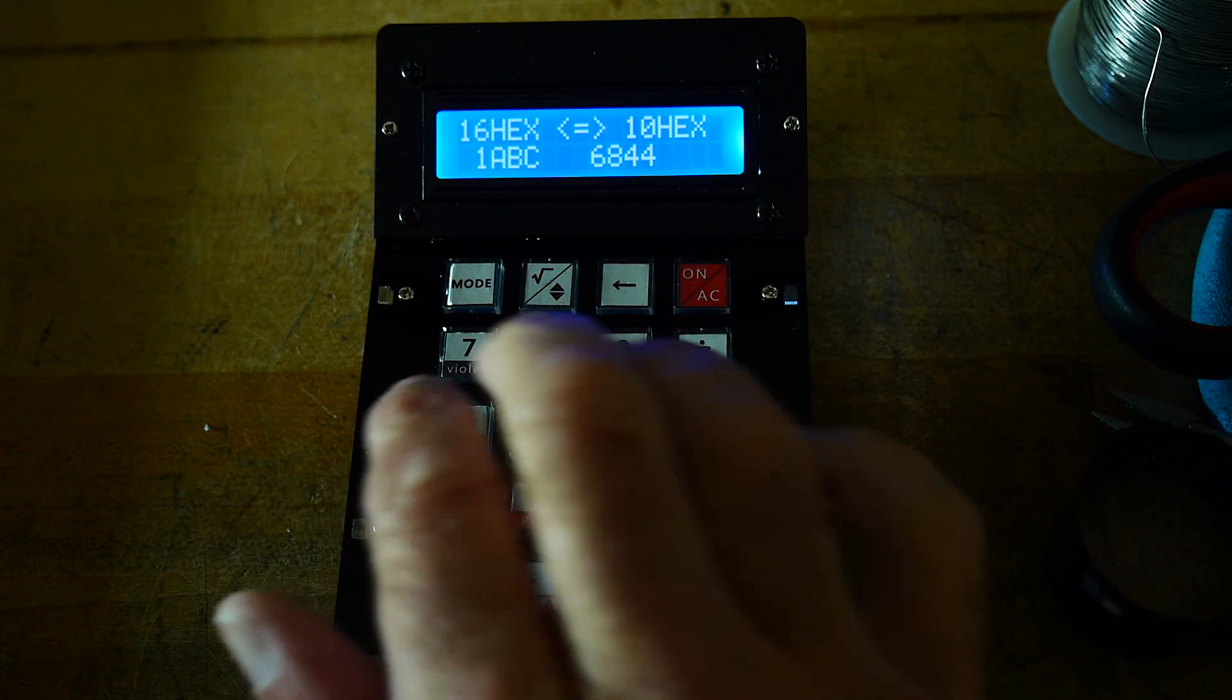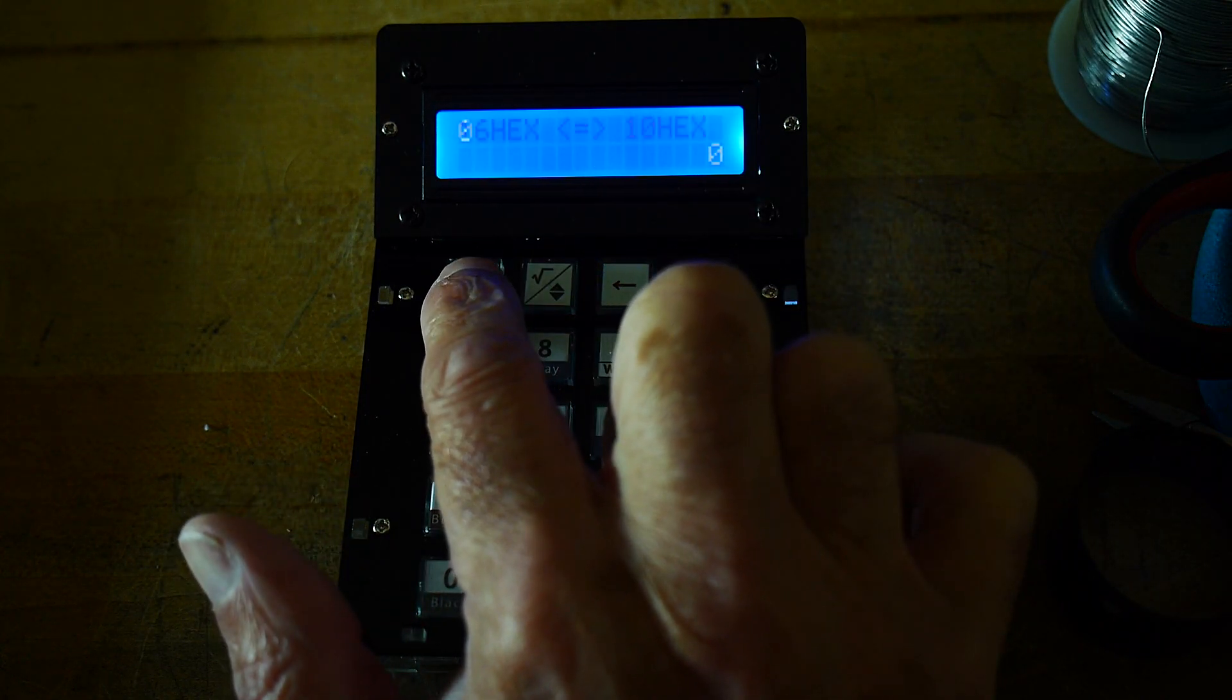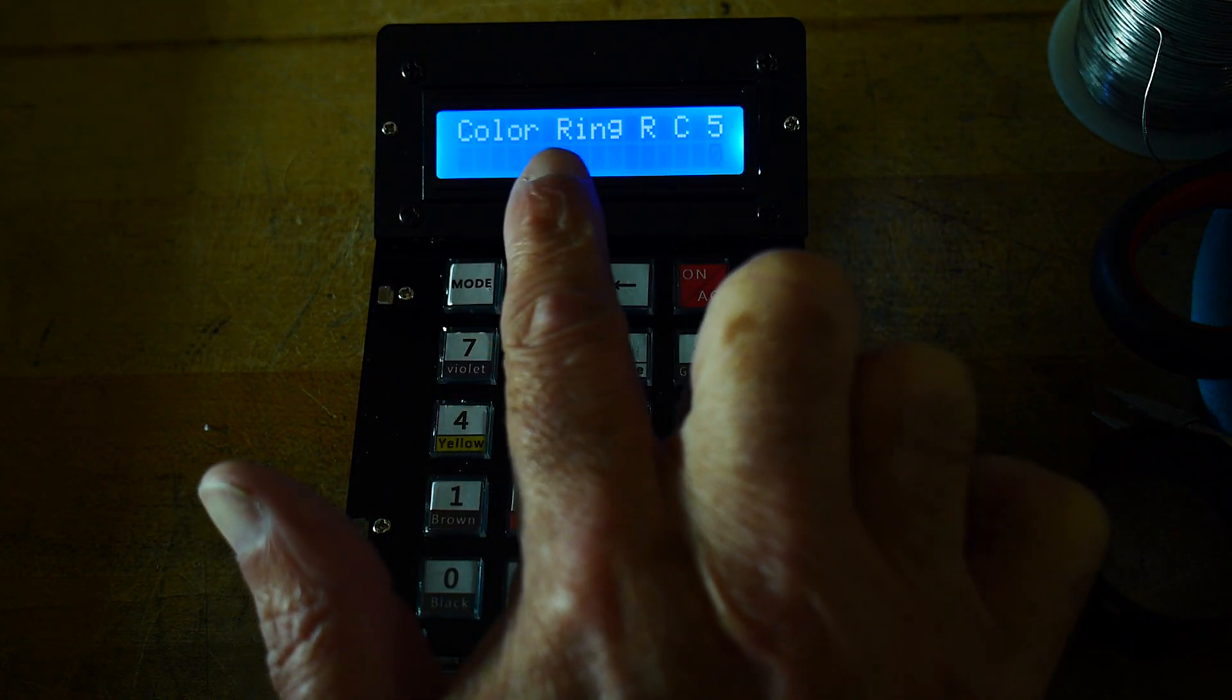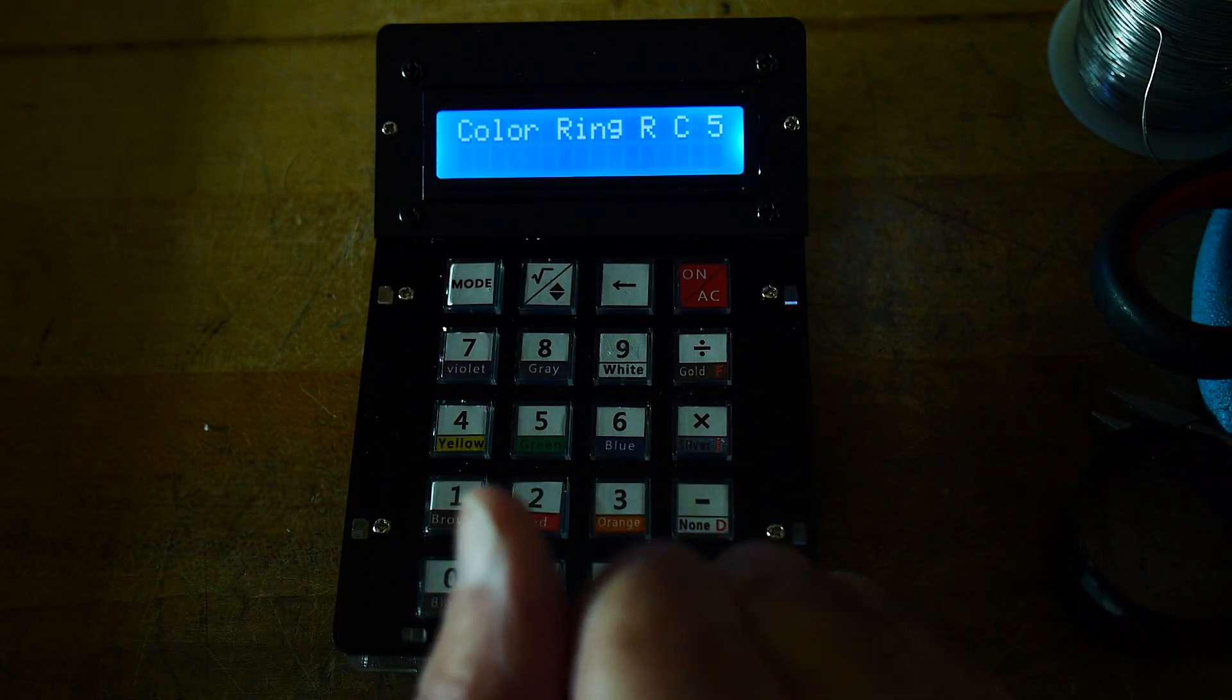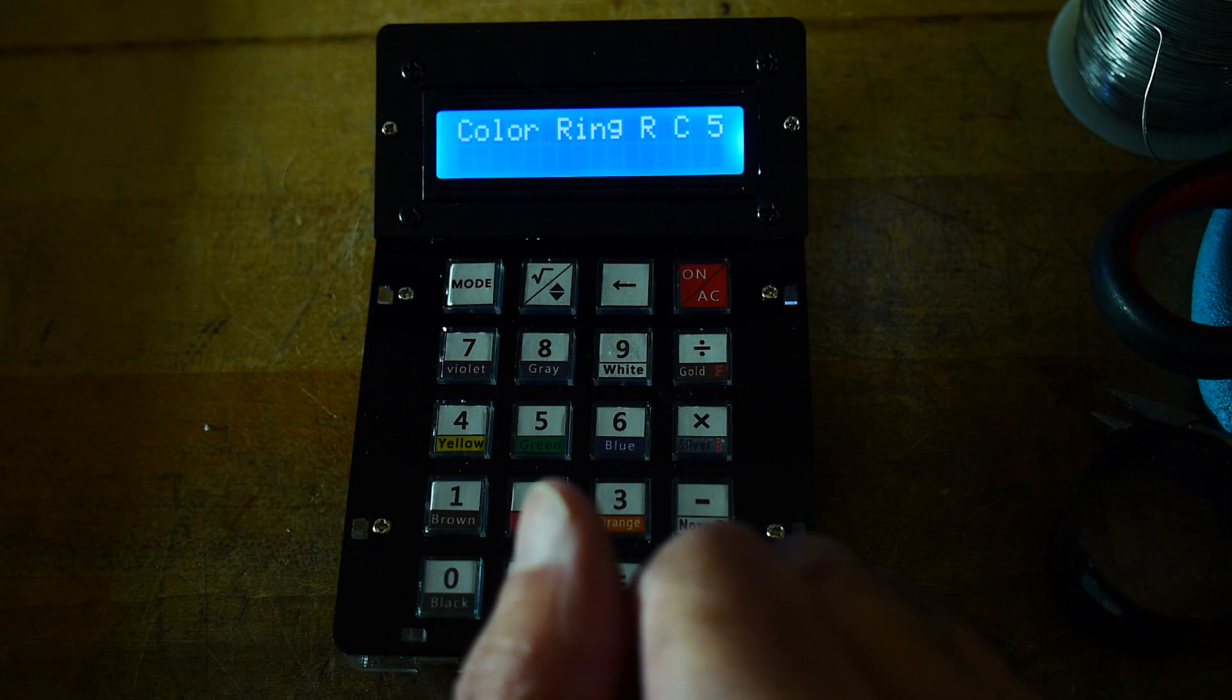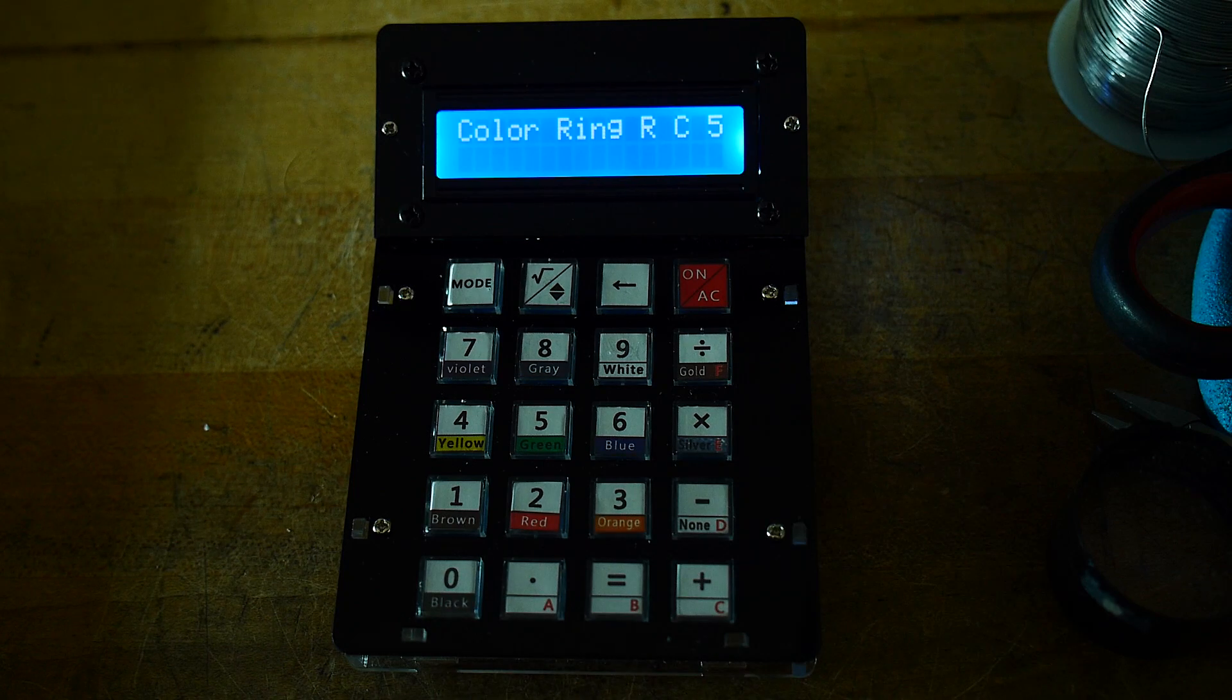So that's kind of fun. That could be handy. Okay, so the other modes are color ring. So we're going to type in a color ring and it's going to tell us the value. Now the color ring is for a resistor. So if we have a 1K resistor, the bands are going to be brown, black, red.